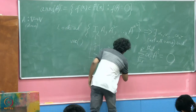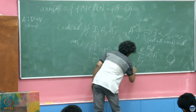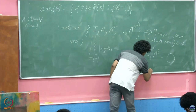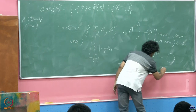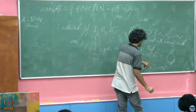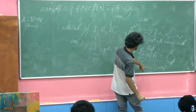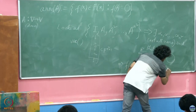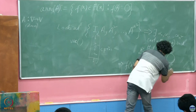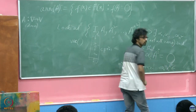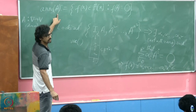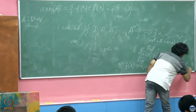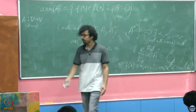Therefore there exist alpha 0, alpha 1 to alpha n squared not all zero such that the summation of alpha i times A to the power i, for i going from 0 to n squared — where A to the 0 is of course the identity — is going to be identically 0. This means that f(x) given by alpha 0 plus alpha 1 x plus dot dot dot plus alpha n squared times x to the n squared belongs to the annihilating ideal of A, and therefore this is non-empty.